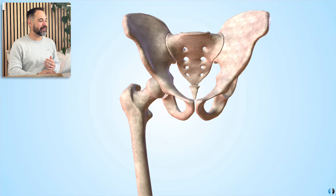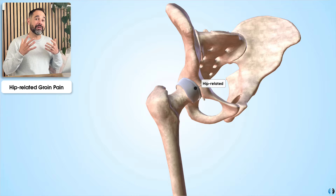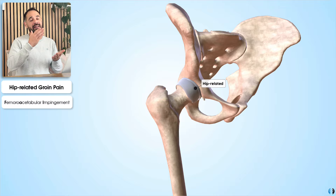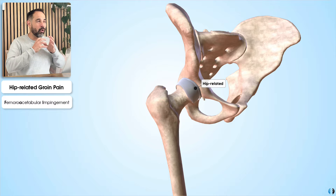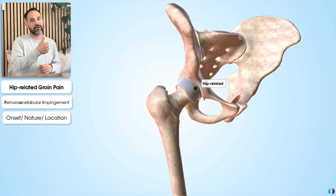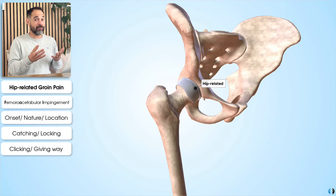The final type is hip joint-related groin pain — pain stemming from the hip joint itself. When thinking of young sporting athletes, one of the key things we're probably considering is femoroacetabular impingement (FAI). The experts agreed the hip joint should always be screened for when patients have groin pain. Key history items include the onset, nature, and location of symptoms, and we should screen for mechanical signs such as catching, locking, clicking, or giving way, which can all be present in conditions such as FAI.